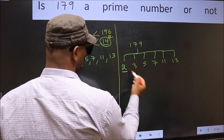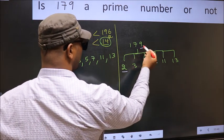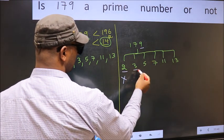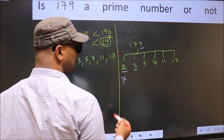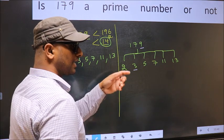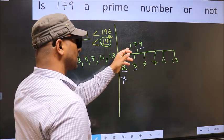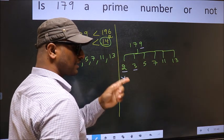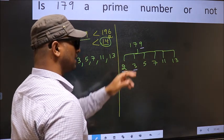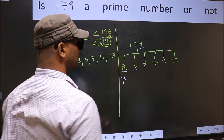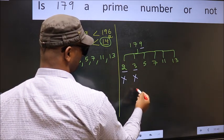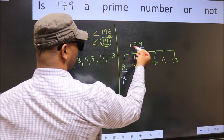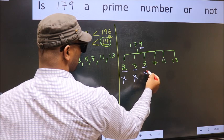Starting with 2. Last digit 9, not even, so this is not divisible by 2. Next, number 3. To check divisibility by 3, add the digits: 1 plus 7 plus 9, we get 17. 17 is not divisible by 3, so this number is also not divisible by 3. Next, number 5. Last digit is neither 0 nor 5, so this is not divisible by 5.